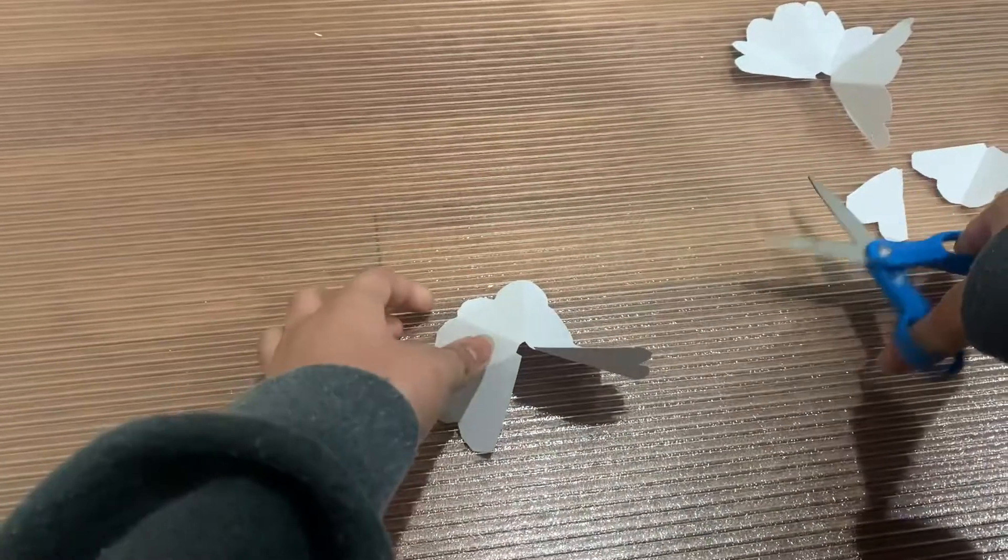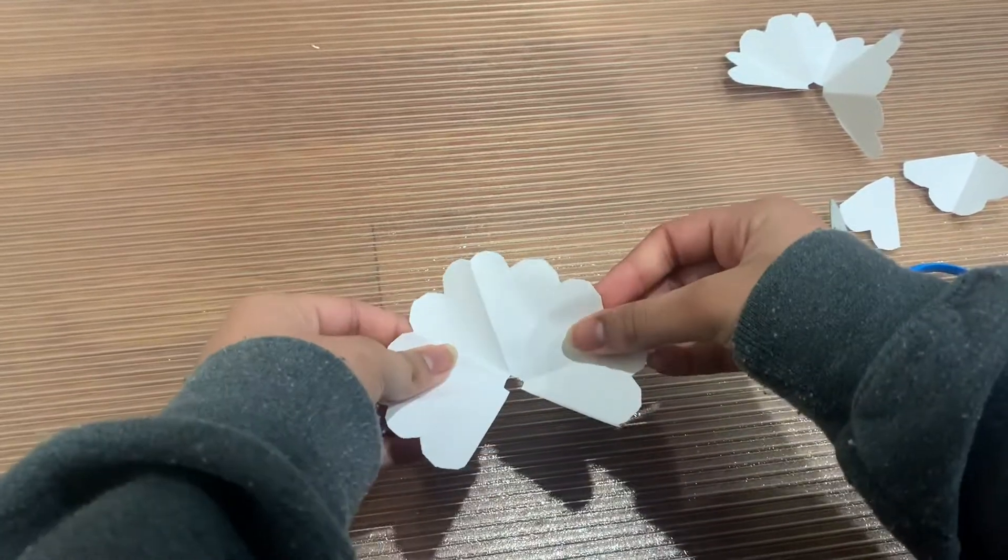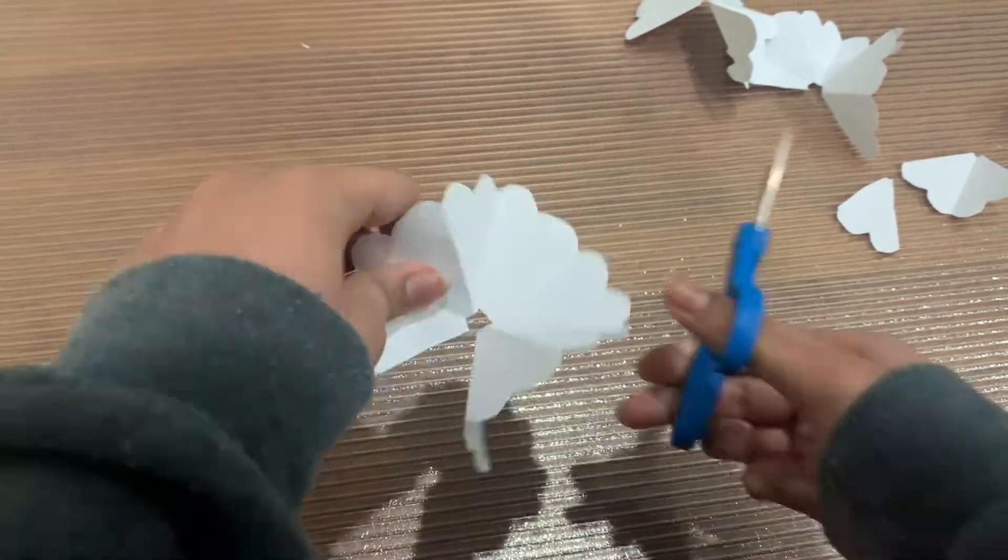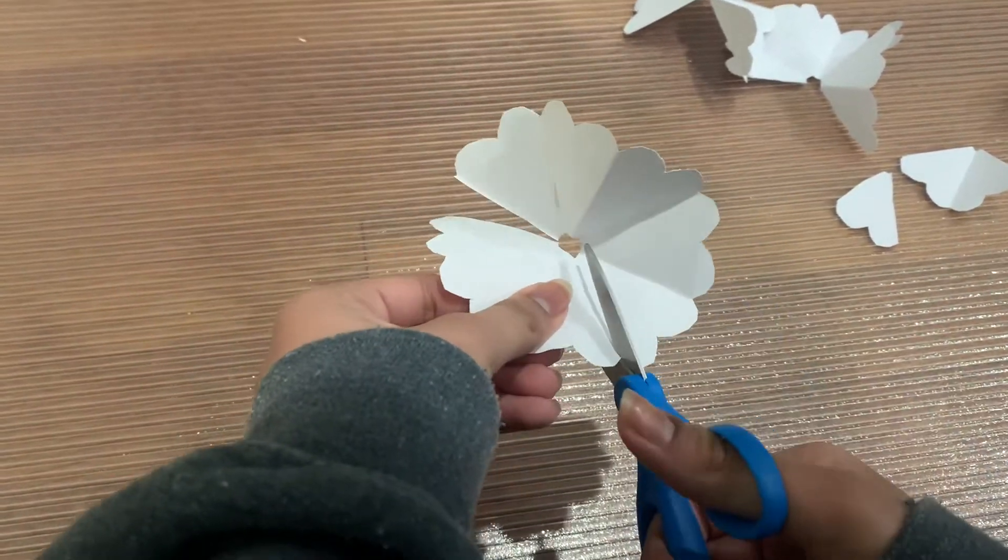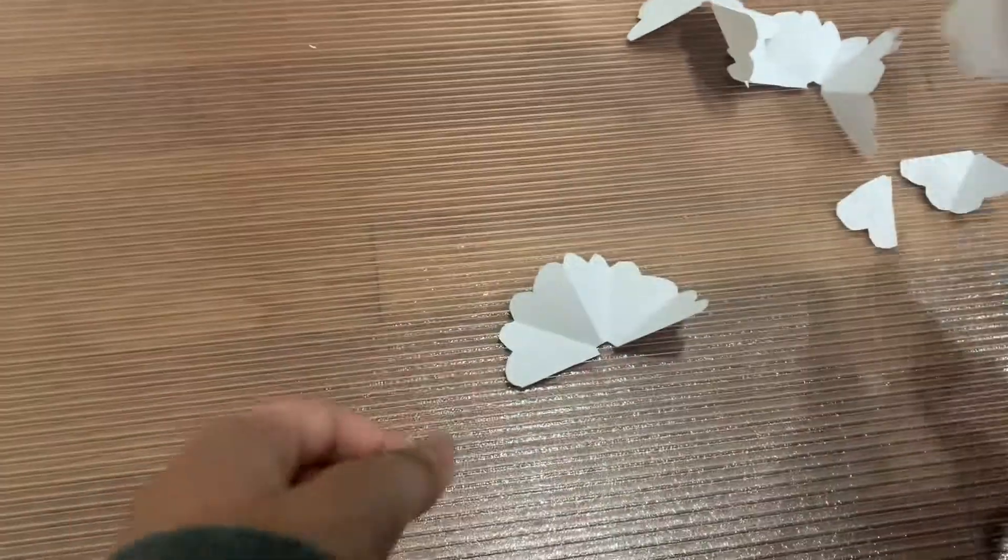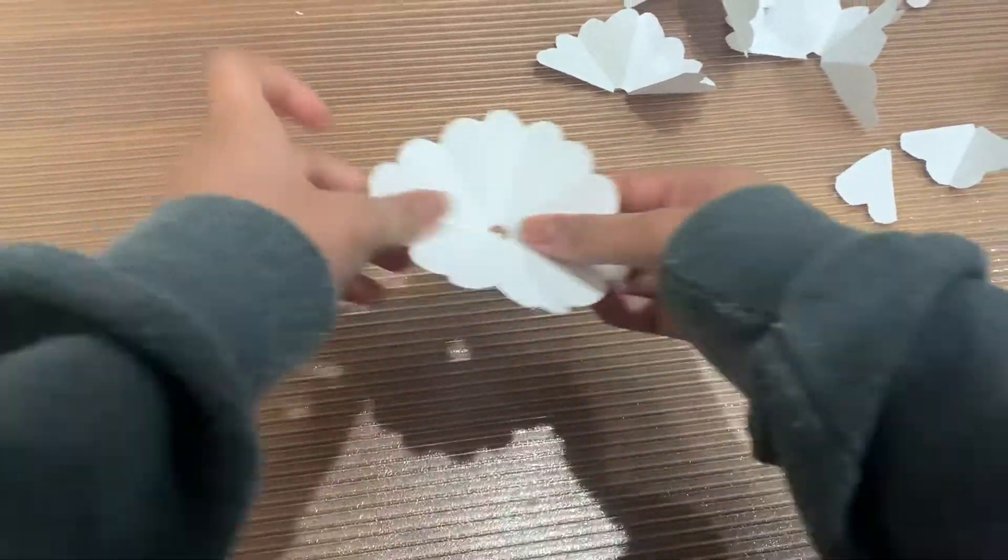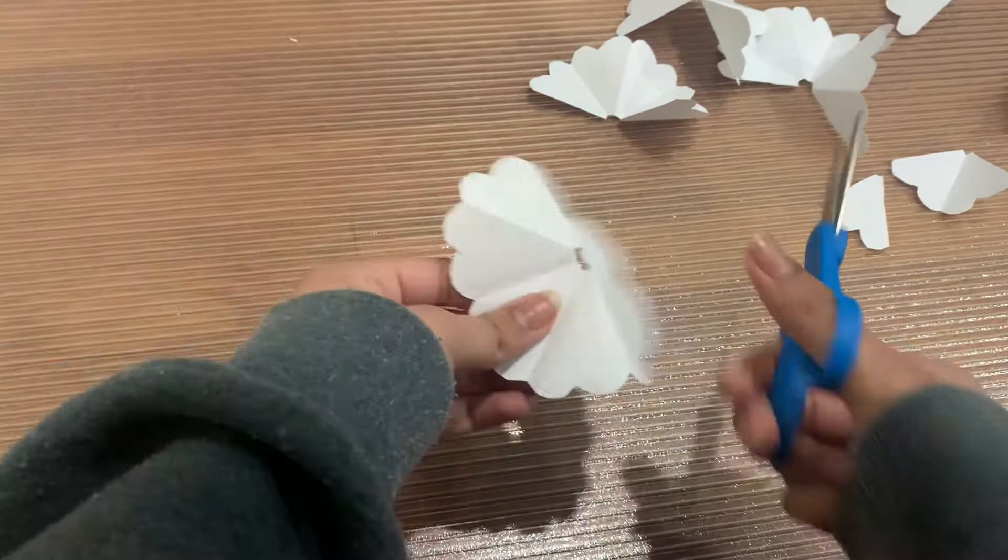Then you're going to take the next one and you guessed it, we're going to cut three petals out of it. And then for the last one, since there's eight and we're going to take four out, we're just going to cut it in half.